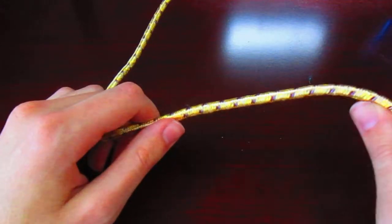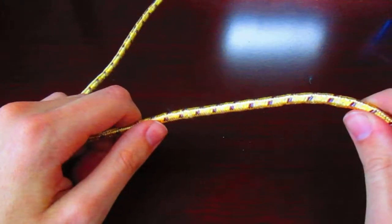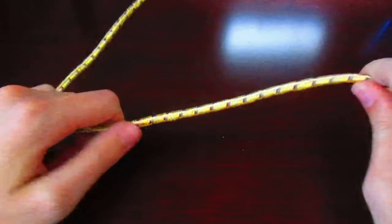Just briefly, here is some rope terminology to make teaching easier. An underhand loop. You have two parts: the working part and the standing part.